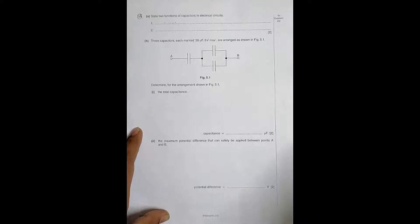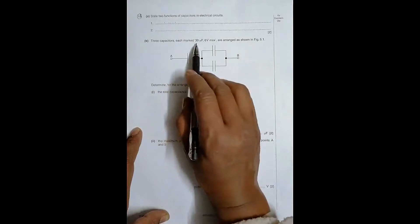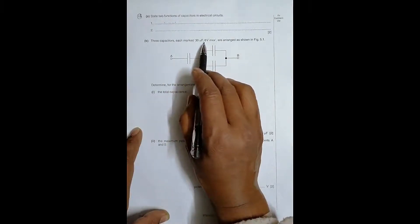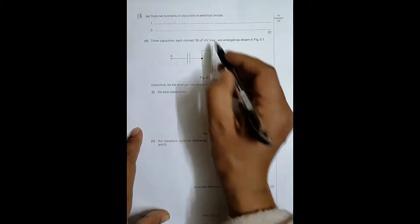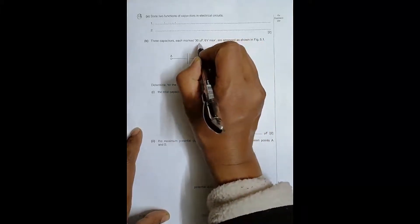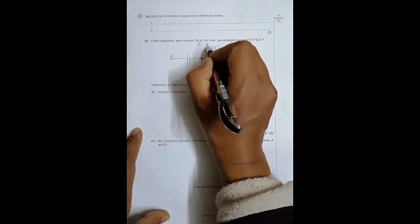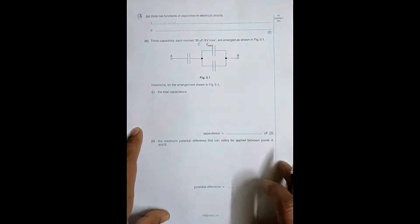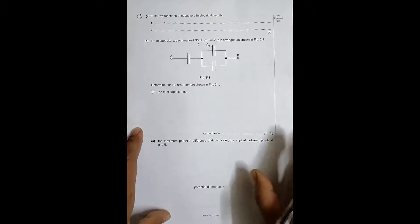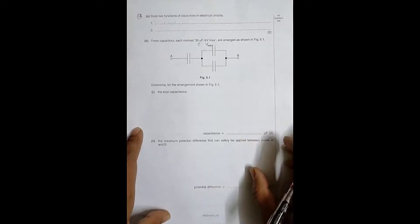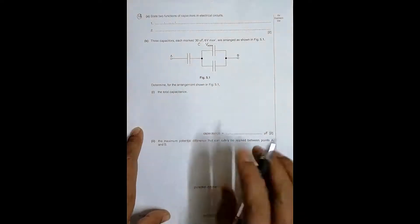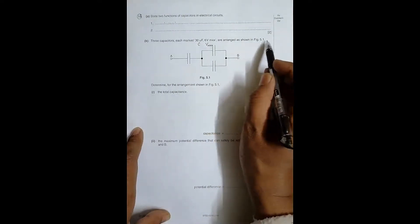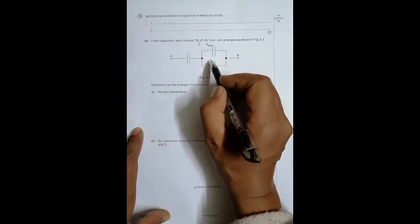In question B, three capacitors are given, each marked 30 microfarad and 6 volt maximum. The capacitance and the maximum PD it can withhold are given so that we can find the maximum charge they can hold. As shown in figure 5.1, two of them are in parallel and this parallel combination is in series with the third one.